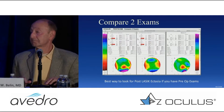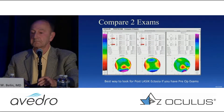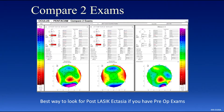And I think patients love this display. When you show them the difference map, they can see that red on the right where the difference is occurring — whether it's keratoconus, post-LASIK ectasia, or after cross-linking — showing them how their cornea is changing. I think this display is very helpful.